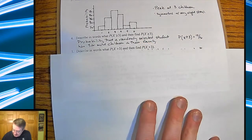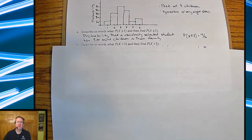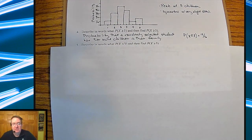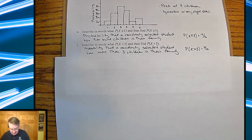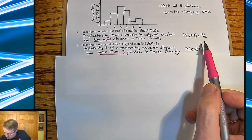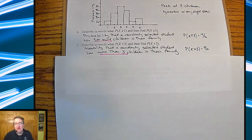Then they ask: describe in words what P(X > 3) means. Most students, regardless of what flavor of algebra 2 they had, are pretty good about saying obviously three doesn't get included. Given the fact that we're doing discrete random variables, since it's discrete, it's very easy to see that we've got to take three out. So it's the probability that a randomly selected student has more than three children in their family. So this one is three or more, this one is more than three. Here you don't include the 5/16 probability that somebody has three children in their family — that's the difference, and it's obviously rather significant.